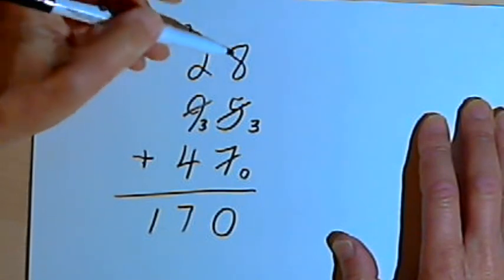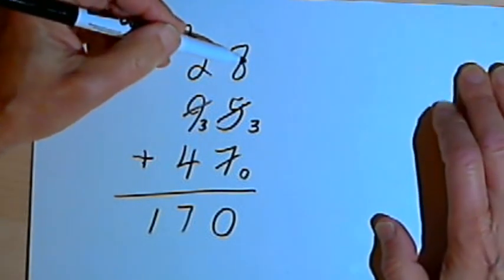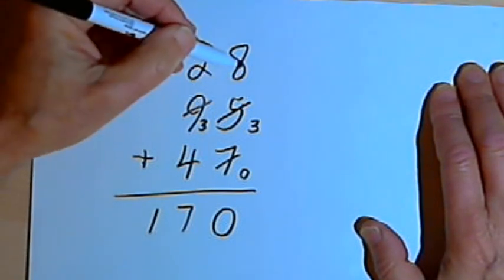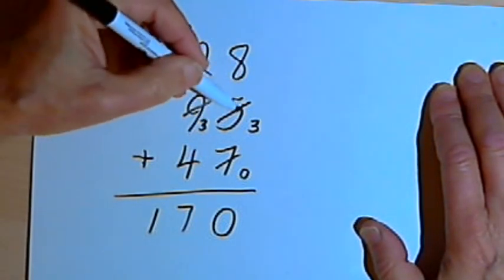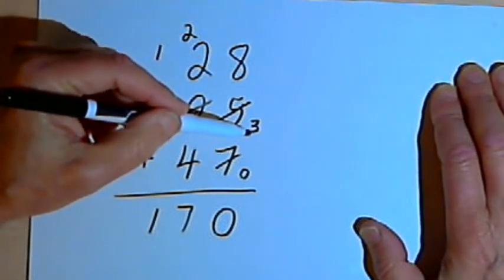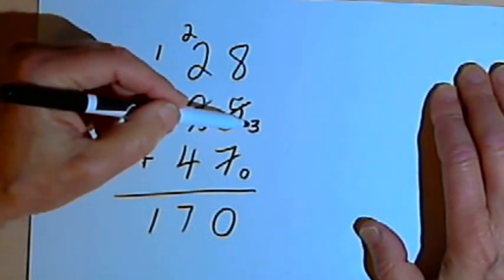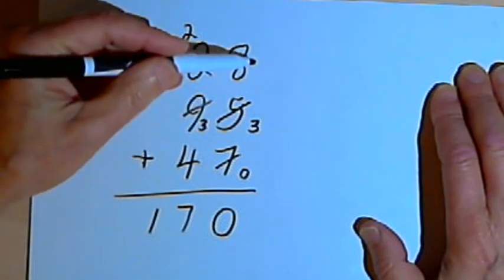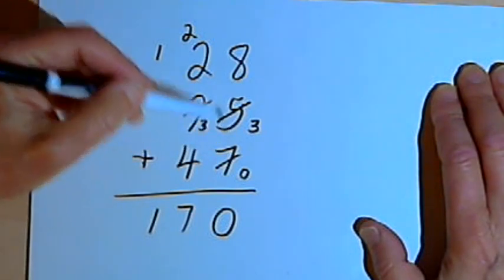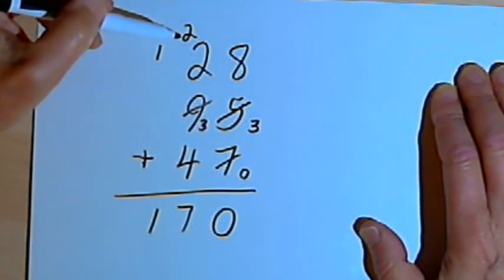So once again, the basic process is you're adding as you would normally add, but each time you get a number that takes you into two digits, you cross out a number and write the units part of that two-digit number next to the number you crossed out. You keep doing this. Notice when you're done with a column, you count how many scratches you made and carry that number into the next column.